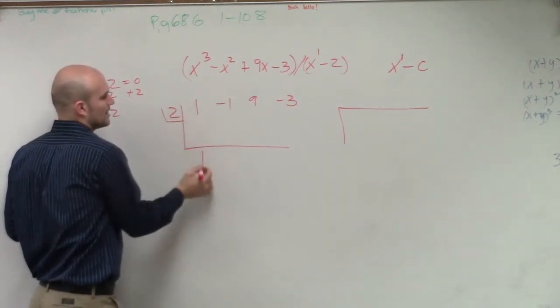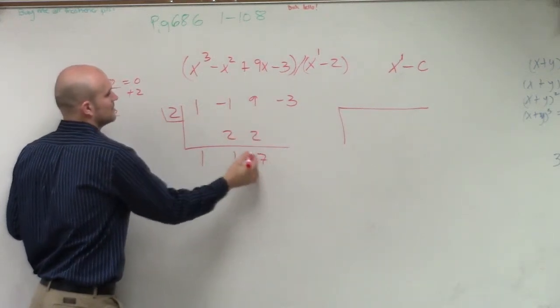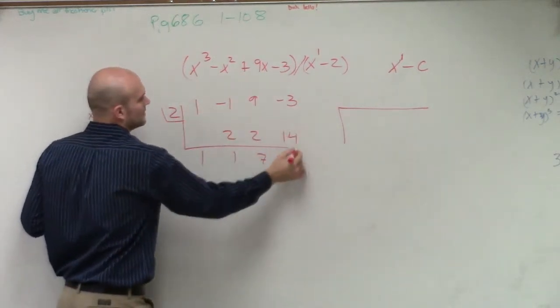So now we bring down the 1. 1 times 2. Bring down the 1. 1 times 2 is 2. 1, 2, 7. 7 times 2 is 14. 11.